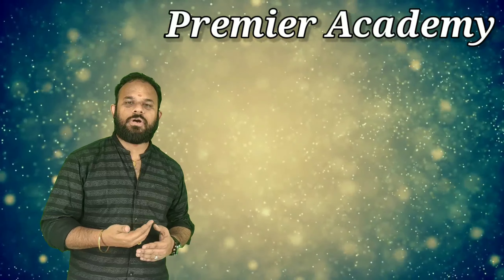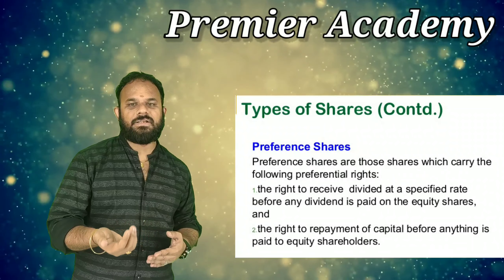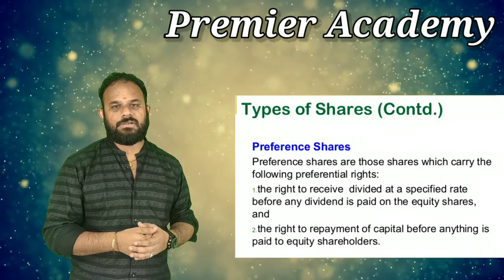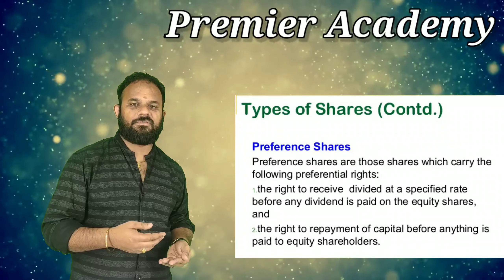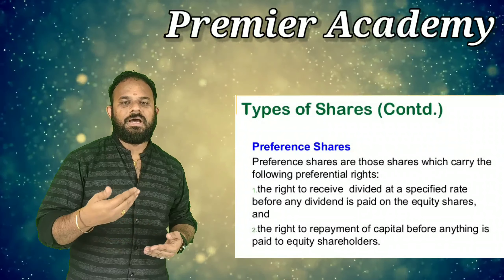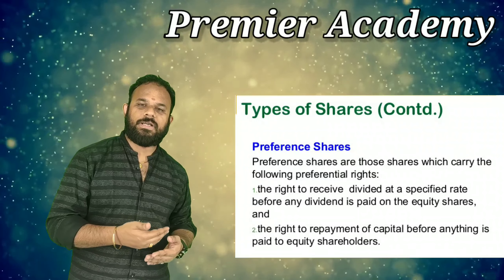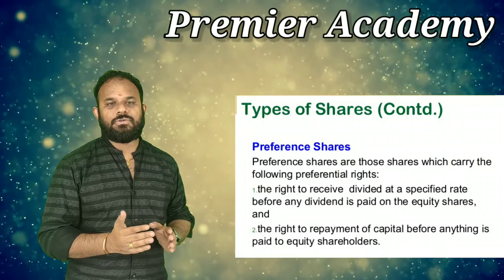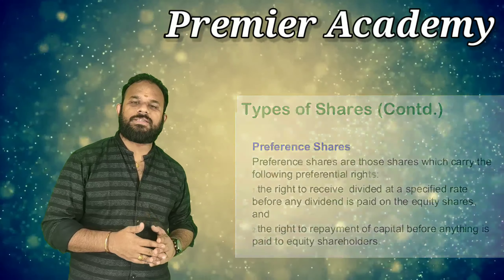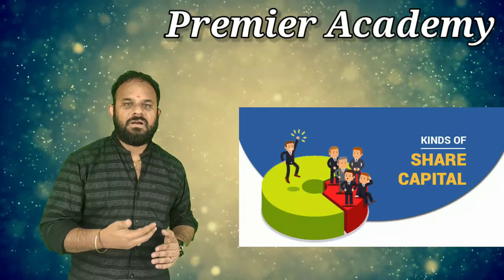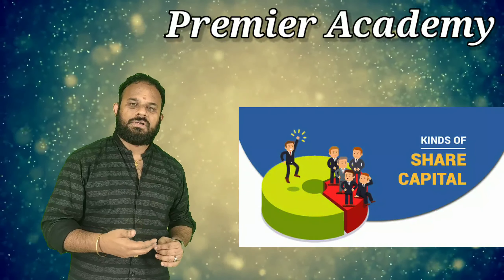There are two kinds of shares: equity shares and preference shares. Preference shareholders will have a preferential right, while equity shareholders will have voting rights and differential rights. This covers the kinds of shares that we have.